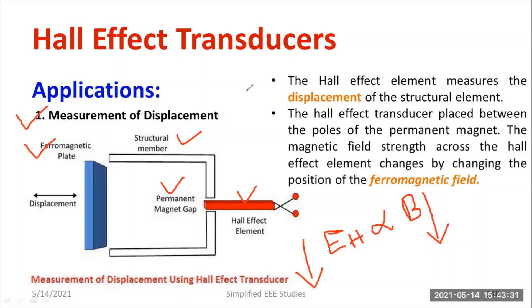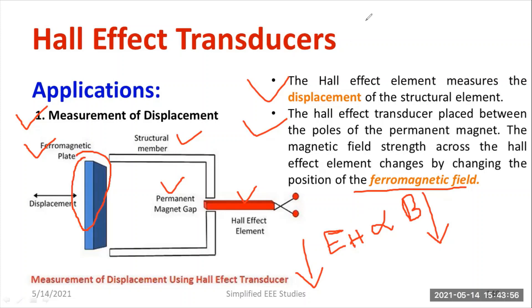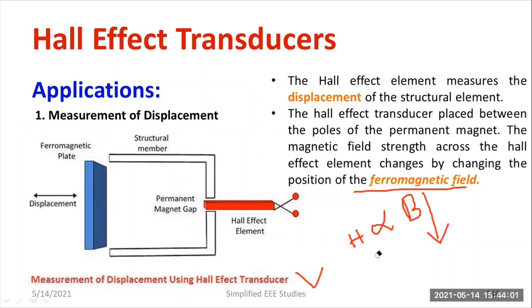The Hall effect element measures the displacement of a structural element. The Hall effect transducer is placed between the poles of a permanent magnet, creating a transverse magnetic field. The magnetic field across the Hall element changes by changing the position of the ferromagnetic plate, identifying changes in position. Accordingly, the EMF will vary, and you can measure changes in displacement in terms of Hall EMF.